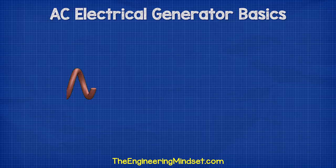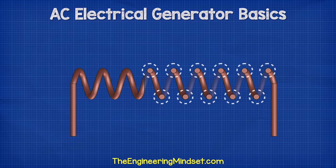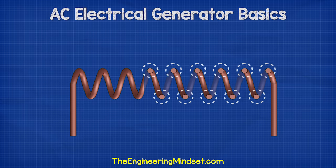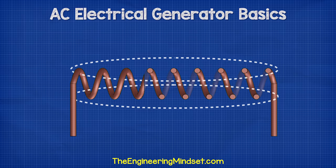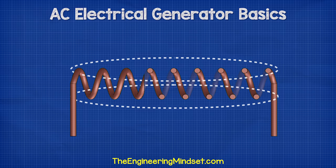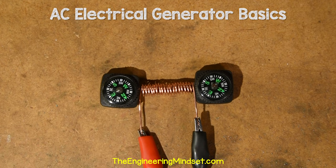If the wire is wrapped into a coil, the magnetic field becomes stronger. Each cross section of wire still produces an electromagnetic field, but they combine together to form a larger, stronger magnetic field. The electromagnet produces a north and south pole, just like a permanent magnet.